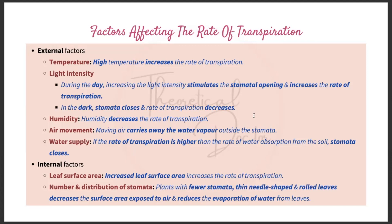Air movement (wind) carries away water vapor outside the stomata, creating a steep concentration gradient. Water vapor from the sub-stomatal cavity diffuses rapidly to the outside, and the rate of transpiration increases under dry and windy conditions. When there is little air movement, water vapor accumulates around the stomata, decreasing the concentration gradient and reducing water loss. In summary: increased air movement increases transpiration; reduced air movement decreases it.